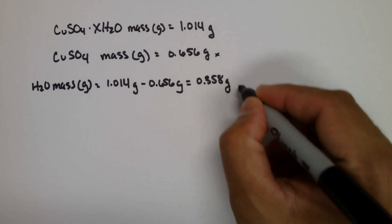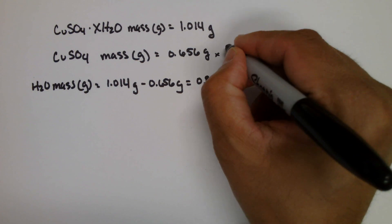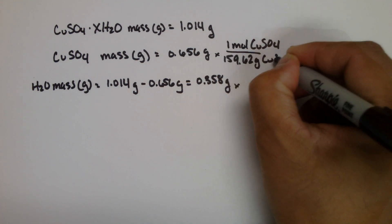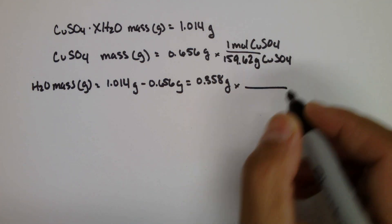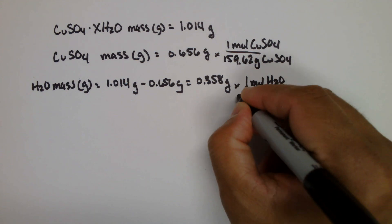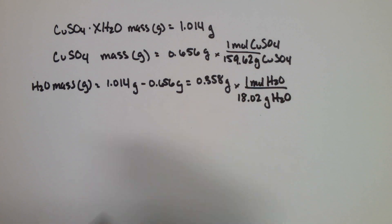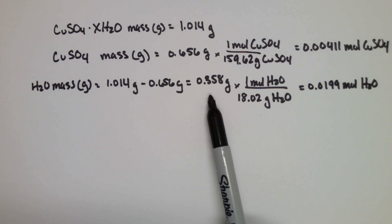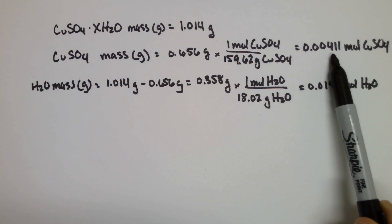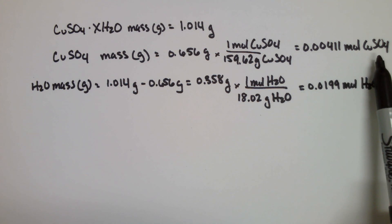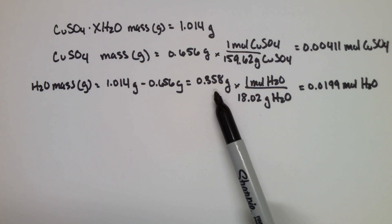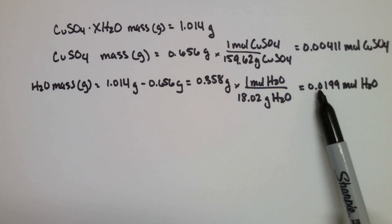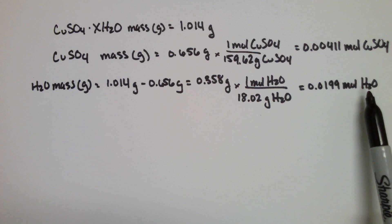Let's go ahead and convert these to their respective moles. To three significant figures, I get 0.00411 moles of copper sulfate, and to three significant figures here, I get 0.0199 moles of water.